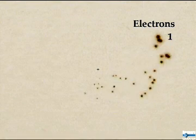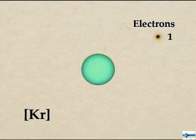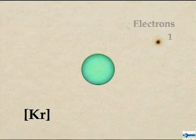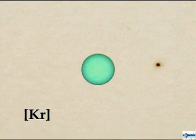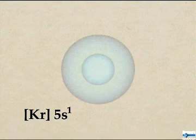Krypton has 36 electrons distributed among four orbital shells. Rubidium's single additional electron is found in the spherical 5s orbital shell.